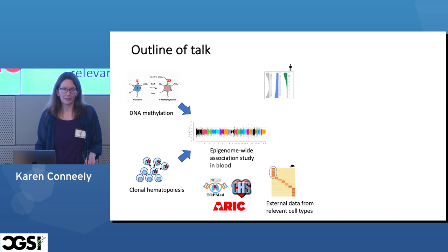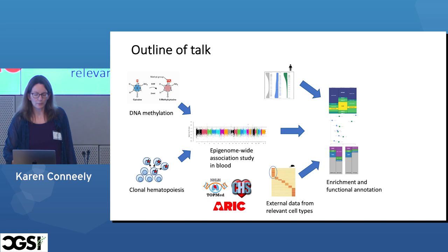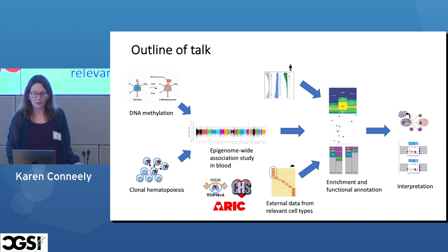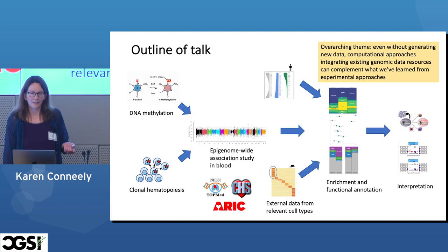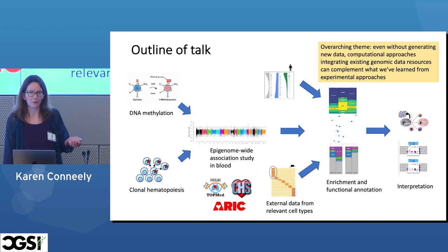Blood isn't always the ideal tissue to study — it's pretty close for what we're studying — but there are even better cell types, and so we'll bring in some external data from relevant cell types. We'll integrate it together to do enrichment and functional annotation analyses to help interpret what we find. An overarching theme is that generating new data requires resources we don't always have, especially when you're junior, but there's really a wealth of existing genomic data resources out there. We can take advantage of these and integrate them in new ways to answer new questions, complementing what we learn from experimental approaches.